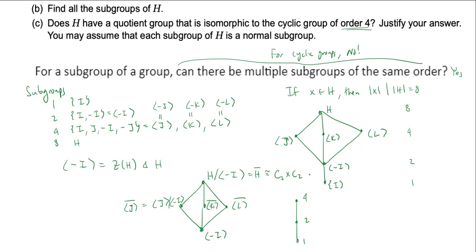What you get instead is the Klein four-group — the cyclic group of order 2 cross the cyclic group of order 2, sometimes written V4, K4, Z2 × Z2, or Z mod 2Z cross Z mod 2Z, depending on your course notation.